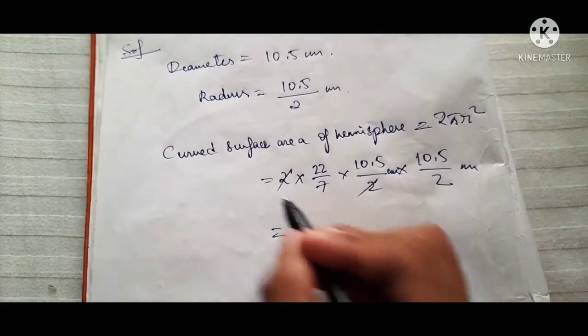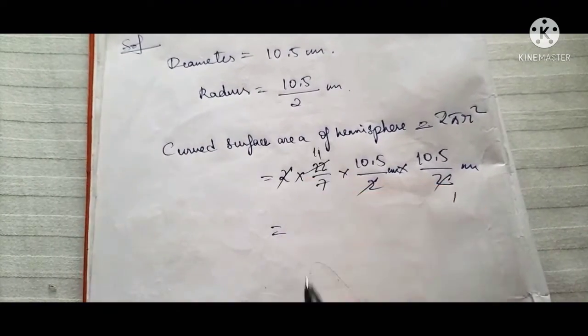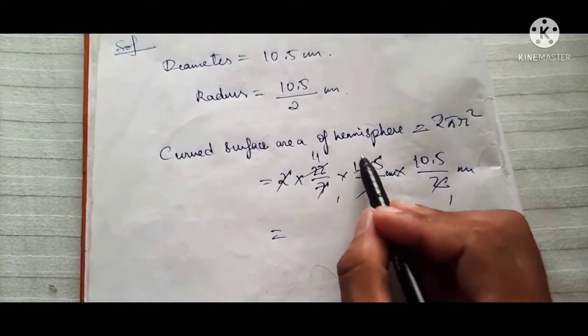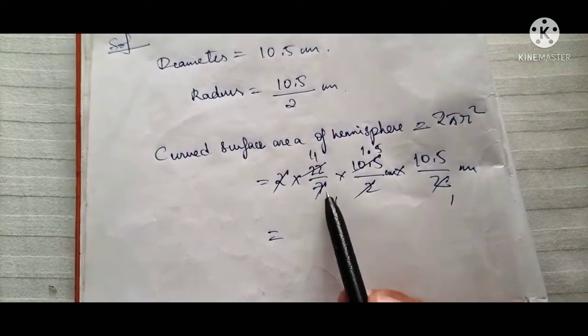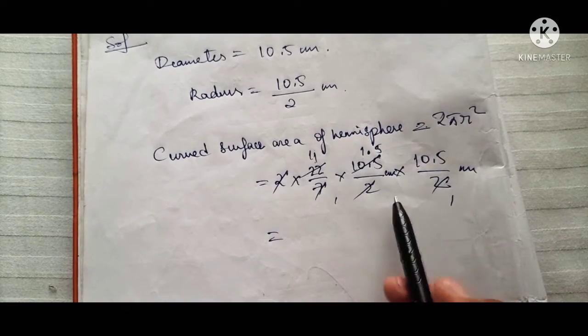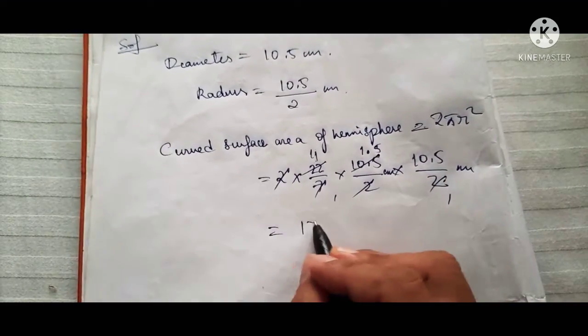So 2, 2, you can cancel it. 2 ones are 2, 2 elevens are 22, and 7 one 7, 7 1.5, the 10.5. Okay, if you multiply 11 into 1.5 into 10.5 into 10.5, you will be getting here 173.25 centimeter square.